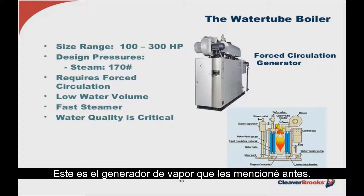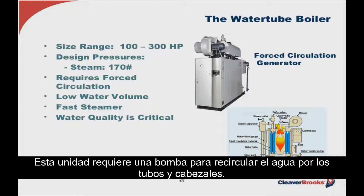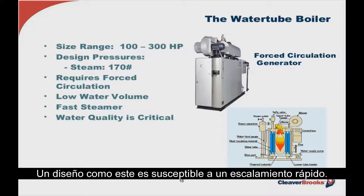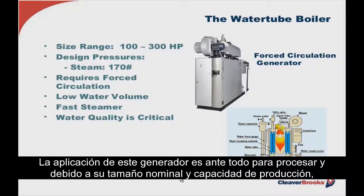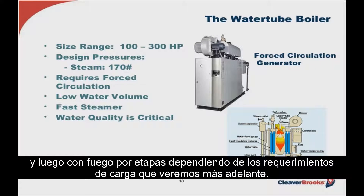Here is the steam generator — a vertical top-fired water tube boiler, but not a natural circulator. It requires a pump to circulate the water through the tubes and headers, and because of its very small water content, it can produce steam very quickly. However, it's also very sensitive to water quality as a design like this is susceptible to rapid scaling. Applications are primarily process, and because of its nominal size and output capacities, you often find multiple units sequenced through an integrated central control system and stage-fired based on process load requirements.